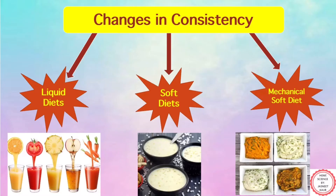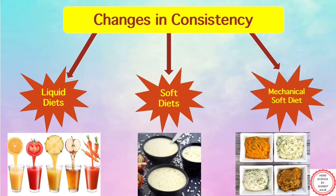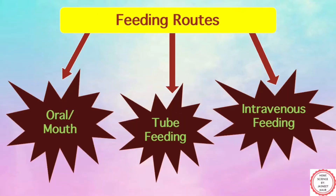The last kind in change of consistency is mechanical soft diet. This is a diet we even give to normal adults in the older age group. People who have problems in chewing or swallowing can have this kind of diet to meet their nutritional requirements. We include food items like soft or mashed vegetables or fruits, and even pureed food items. It differs from soft diet in that soft diet is a therapeutic modification of regular diet, focusing on simply digestible food items with no high-fiber, high-fat, or spicy foods.